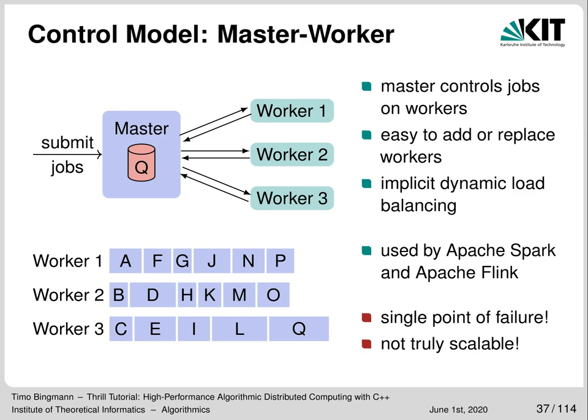The simplest and most widely used task scheduler is the master-worker paradigm. There is a master control program with a queue of jobs — it may know how long jobs will take or what resources they need — and it deals out jobs to a fixed number of workers, scheduling them intelligently. Advantages: it is simple, workers can easily be added or removed, and it implicitly balances uneven workloads. However, the master is a single point of failure, it is not truly scalable because the master must know everything about all workers and jobs, and it may increase latency due to round-trip times sending jobs to workers.